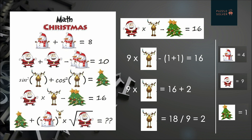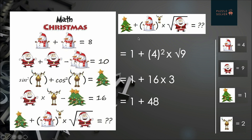We have now solved all four equations. In the final equation we have: one Christmas tree plus snowman to the power of reindeer times the square root of Santa. We solve this using BODMAS — first brackets, then orders (squares and square roots), then multiplication, then addition.